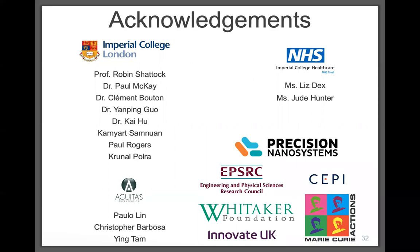On whether the vaccine could be adapted if there is a mutation in the virus strain: yes, that should theoretically be possible. As long as we know the new glycoprotein sequence, we could easily encode it in our vaccine. That's one of the main advantages — it's really easy to adapt as long as the sequence is available.